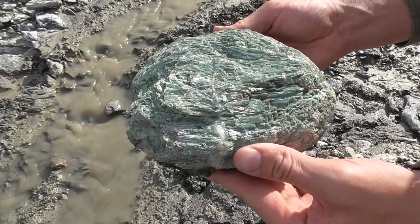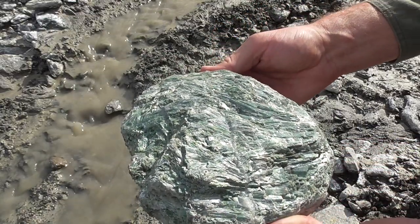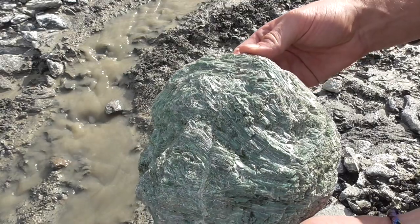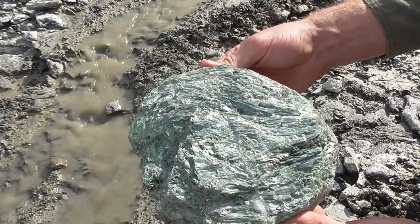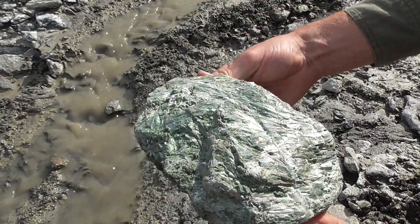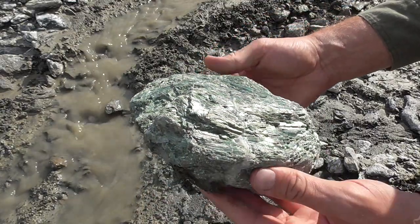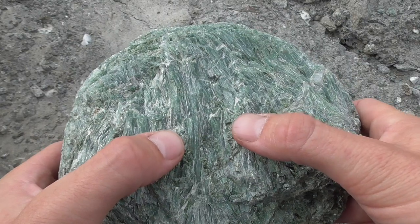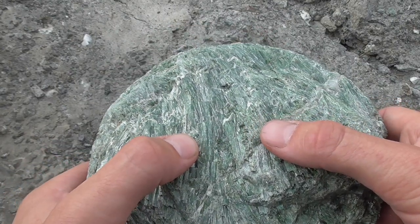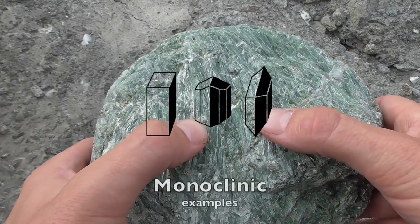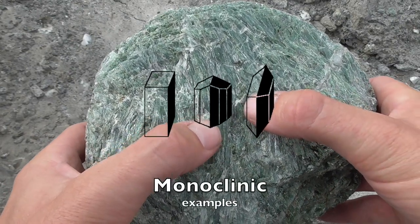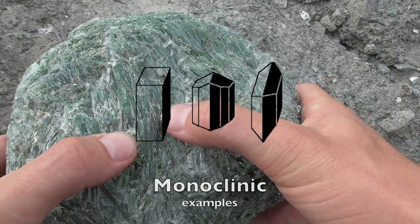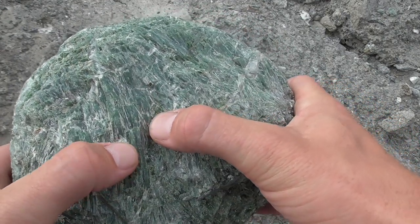Actinolite is a monoclinic crystal system, which basically means it has three uneven vectors. Two of them are going to be at 90 degrees, and one of them is going to be at an angle other than 90 degrees. Thus, the rectangular prisms and the parallelogram bases.